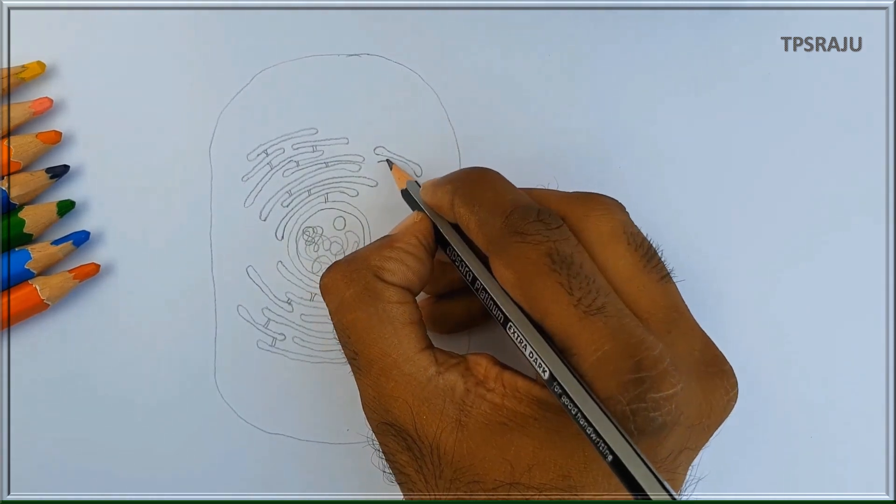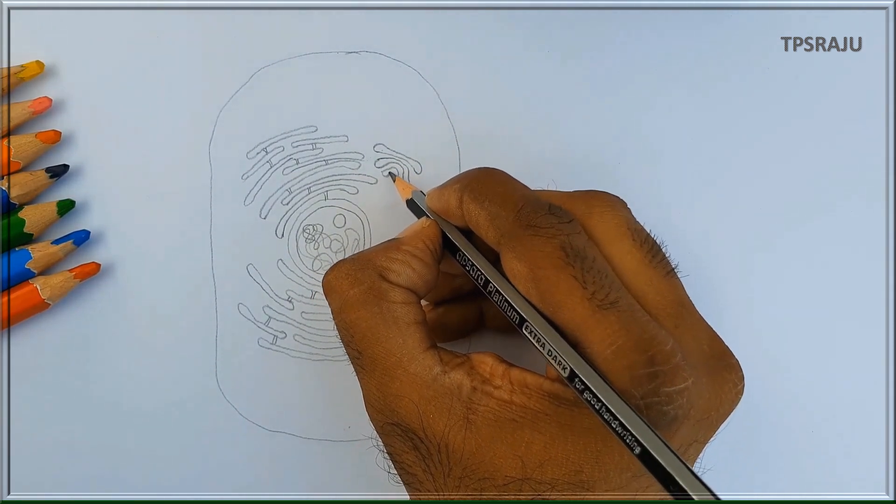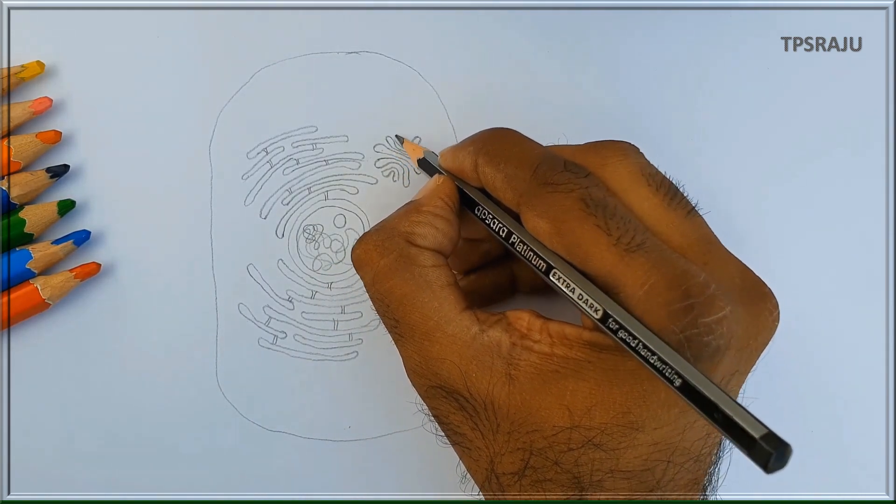Some other membrane-bounded sheet and sac like structures are also present in the cytoplasm called Golgi complex. This is Golgi complex.